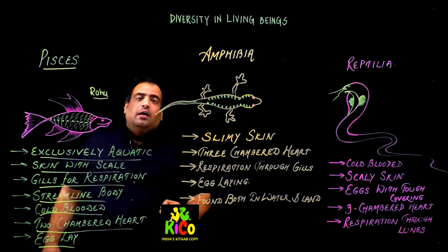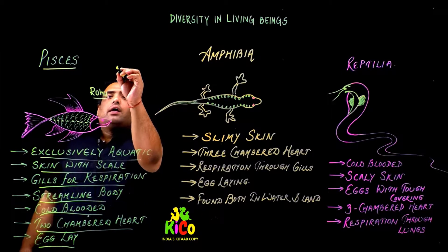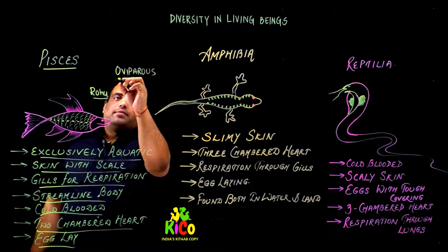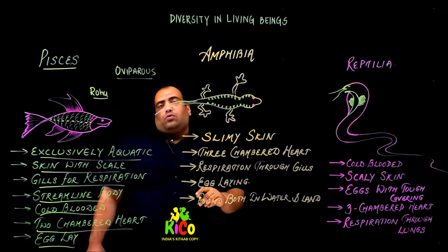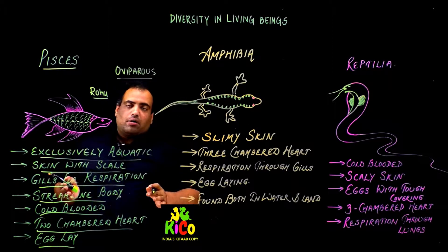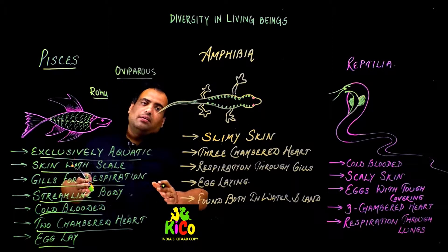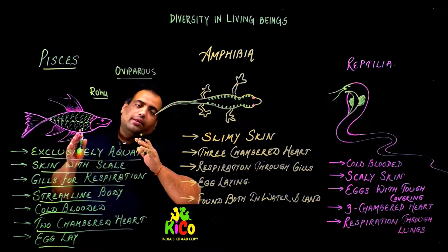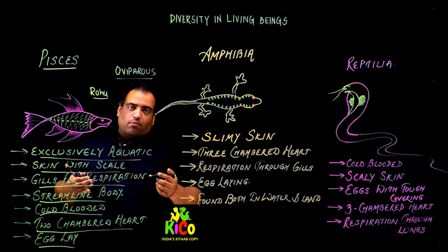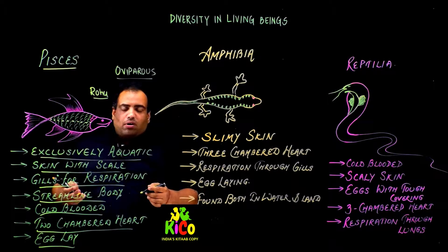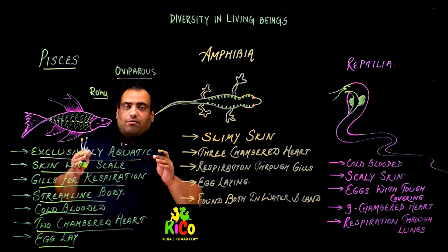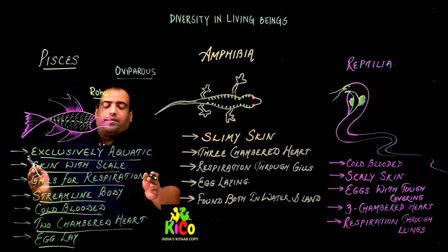Fishes are oviparous, meaning they lay eggs. To summarize Pisces: they are exclusively aquatic, their skin has scales, they have gills for respiration to breathe dissolved oxygen in water, they have a streamlined body to move in water, they are cold-blooded in nature, they have a two-chambered heart, and they are oviparous.